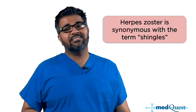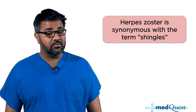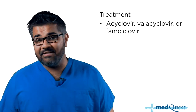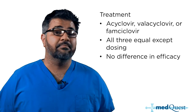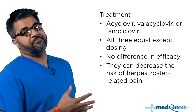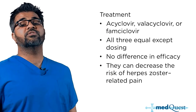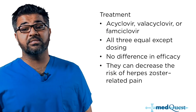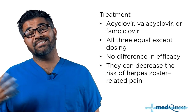Remember, herpes zoster is synonymous with shingles. Acyclovir, valacyclovir, and famciclovir are all equal except in dosing — no difference in efficacy. By treating early with oral therapy, you can actually decrease the risk of herpes zoster-related pain. For lesions along the face, early treatment can prevent severe trigeminal neuralgia later.